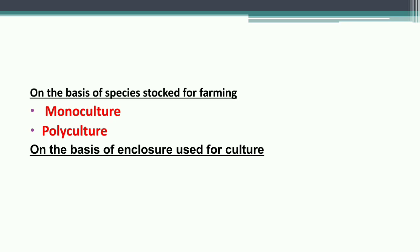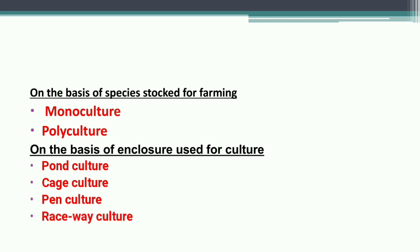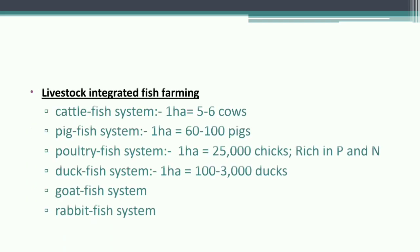On the basis of enclosures used for culture: Pond Culture (done in ponds), Cage Culture (done in cages), Pen Culture (done in pens, usually in seas), and Raceway Culture (done in raceways).